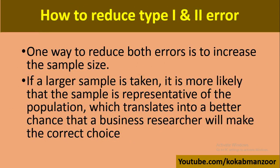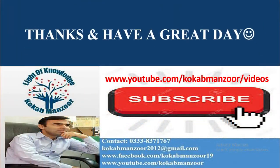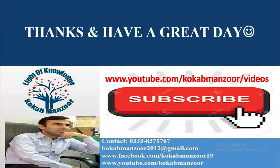ان errors کو کیسے reduce کیا جائے؟ سب سے best طریقہ یہ ہے کہ we need to take a larger sample۔ جیسے دونوں examples میں بتایا، اگر sample بڑا لیتے تو زیادہ observations کی وجہ سے extreme values offset ہو سکتی تھیں اور result population کے زیادہ close ہو جاتا۔ So that was all about Type 1 and Type 2 errors. I hope you got the concept. If there is any confusion, you can watch this video again or write to me for further clarification. Thank you very much.